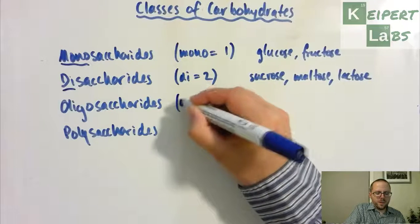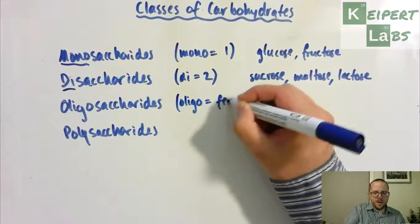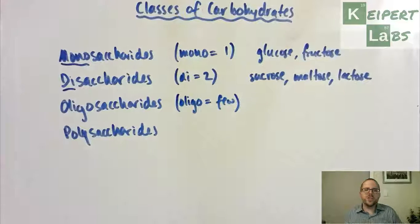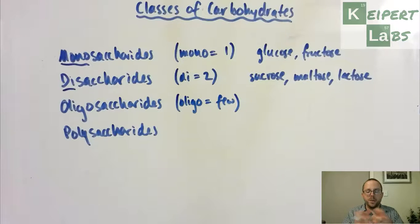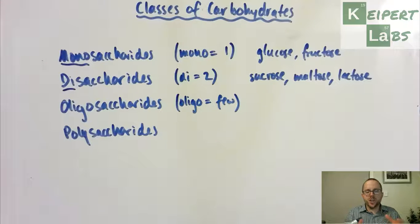Oligosaccharides is our next category. Oligo in general—like we use the word oligarchy to refer to the rule by a few, as opposed to monarchy, the rule by one—when we have an oligosaccharide, we're talking about a short chain of connected saccharides.